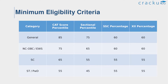In Stage 1, all candidates who have opted for IIM Kozhikode in their CAT applications and fulfill the minimum eligibility criteria would receive an email for online registration for admission. This table refers to the minimum percentile required to get shortlisted for Stage 2, with category-wise classified percentiles including CAT score percentile, sectional percentile, Class 10 percentage, and Class 12 percentage.